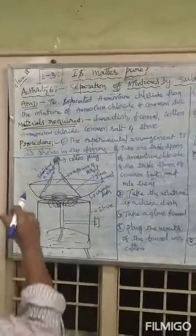Materials required: China dish, funnel, cotton, Ammonium Chloride, Common Salt, and stove.